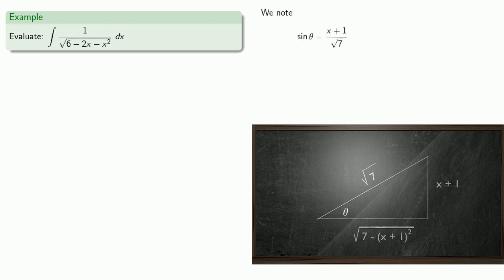We note that sine of theta is x plus 1 over square root 7, and cosine theta is square root 6 minus 2x minus x squared over square root 7.